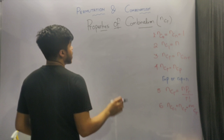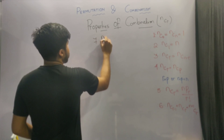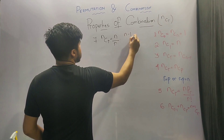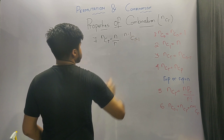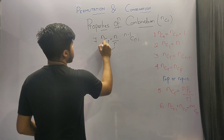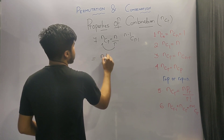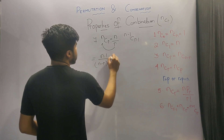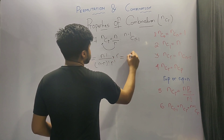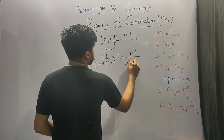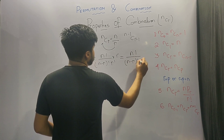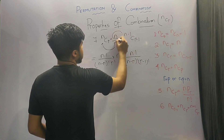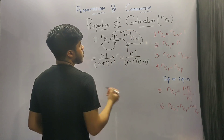The seventh and last property says that nCr is equivalent to n by r into (n minus 1)C(r minus 1). You can prove this by taking r to the LHS: n factorial upon n minus r factorial into r factorial into r equals n factorial upon n minus r factorial into r minus 1 factorial, which is equivalent to n into (n minus 1)C(r minus 1).